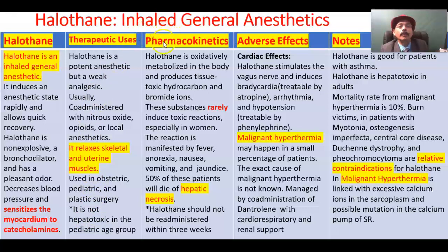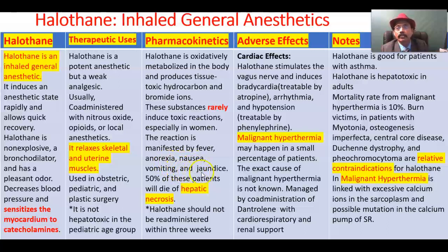Regarding the pharmacokinetics of Halothane: it is oxidatively metabolized in the liver, producing tissue-toxic hydrocarbons and bromide ions. These substances rarely induce a toxic reaction, especially in women. The reaction is manifested by fever, anorexia, nausea, vomiting, and jaundice — that is, excessive bilirubin in the body manifested by yellow coloration. 50% of patients will die of hepatic necrosis.